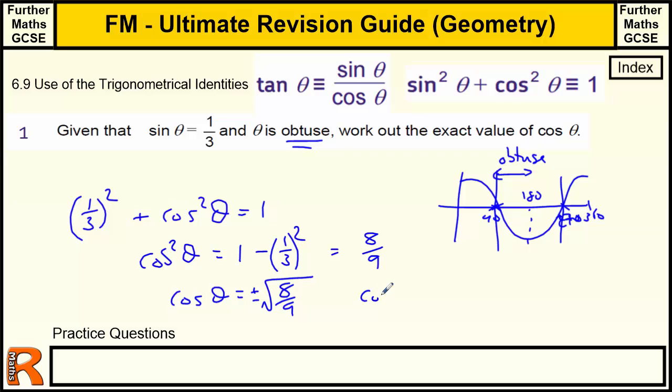So cos theta is equal to minus the square root of eight over nine. We could simplify that a little bit. I don't know how much detail they want you to go into here. It doesn't say simplify it, so that should be OK. But we could break this into root eight over root nine. And root eight is the square root of four times two. And the square root of four is two. So this is two root two. That's what the square root of eight is. And root nine is three. So we could write that, but I think this is fine.